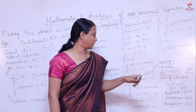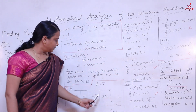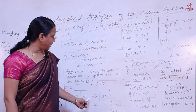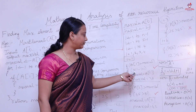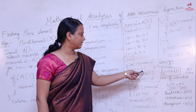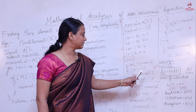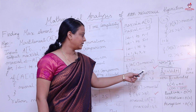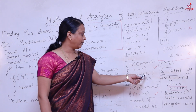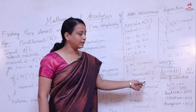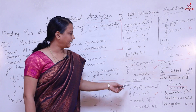In the first iteration, i = 1, so we check a[1] which holds the value 31. We compare: is 31 greater than the current max_value of 21? The condition is true, so we store a[1] into max_value. After the first iteration, max_value is now 31.